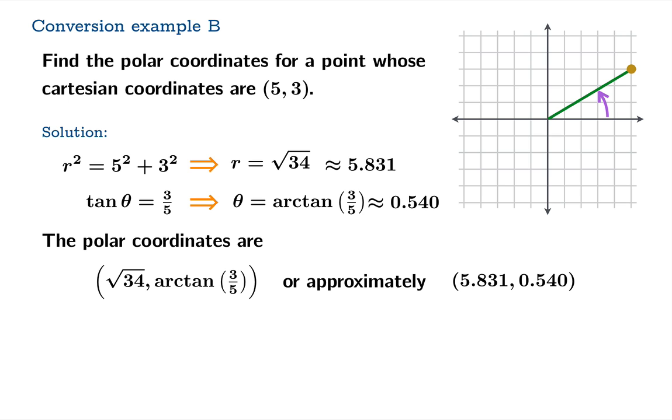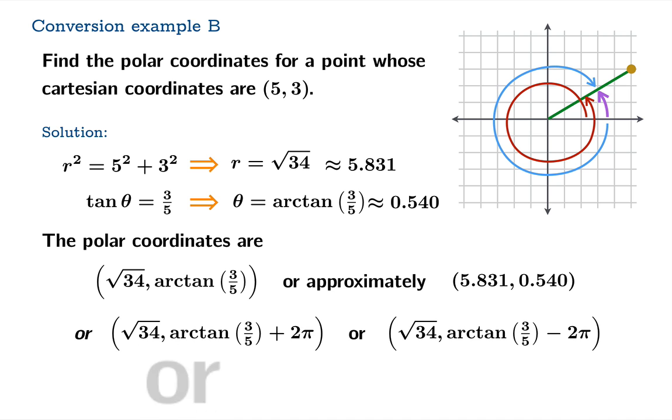or approximately 5.8 comma 0.5. But remember, polar coordinates are never unique, so we've got some other possibilities. We could, for example, add 2π to our theta coordinate and arrive at the same point. Or we could subtract 2π from the theta coordinate. Or we could add π and go backwards root 34, and so on.